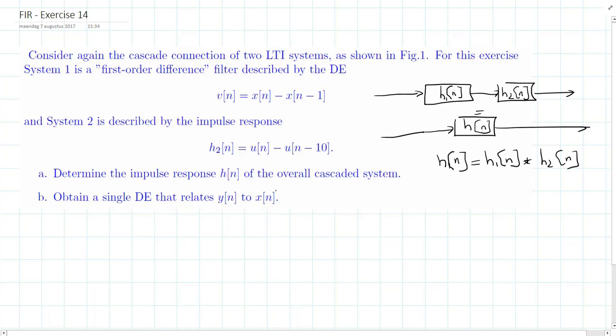So let's first find the impulse responses of our first and second system. Of system 1, our impulse response h1 of n can be described for an input which is equal to a delta pulse. So we have delta n minus delta n minus 1.